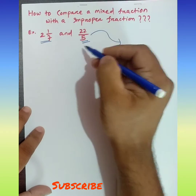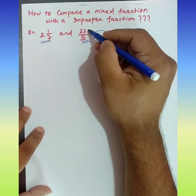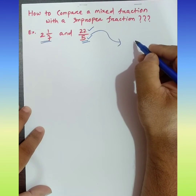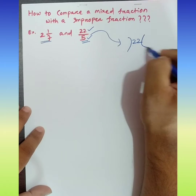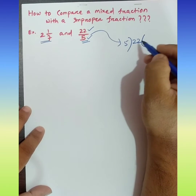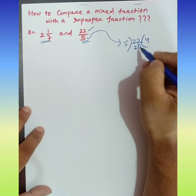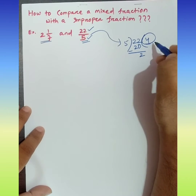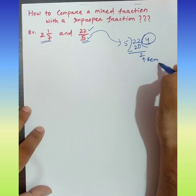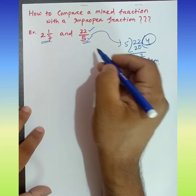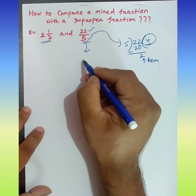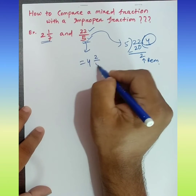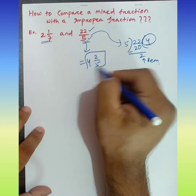First, take the improper fraction 22/5. Here 22 is the numerator and 5 is the denominator. Dividing 22 by 5: 5 times 4 is 20, remainder 2. So 22/5 can also be written as 4 whole 2/5.